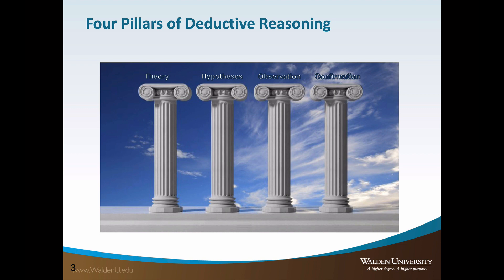What is quantitative research? In a broad sense, quantitative research is a research method where the researcher employs deductive reasoning. The researcher identifies a theory to examine a problem, formulates hypotheses regarding the theory, collects data using observation methods, and then conducts statistical analyses to confirm the theory. These four pillars — theory, hypothesis, observation, and confirmation — are the cornerstones of deductive reasoning, and we will address each in depth.